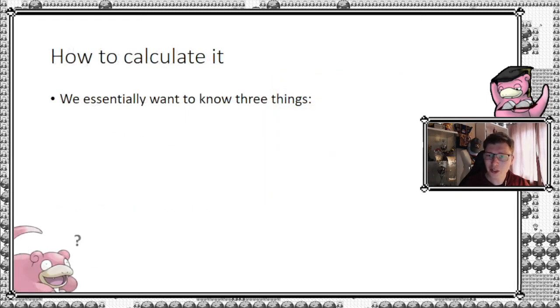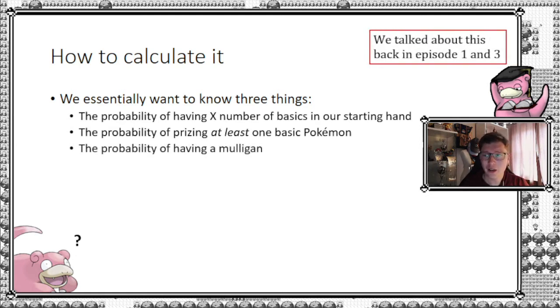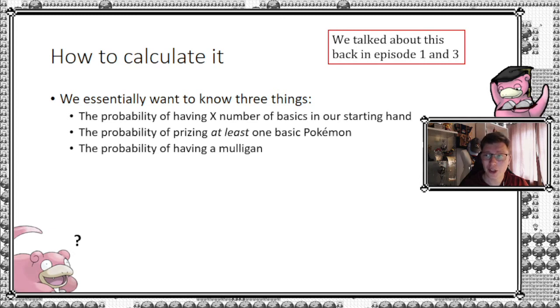So what do we need to know in order to calculate this? Before you get too confused, let's look at it step by step. First, you need the probability of having x number of basics in your starting hand of the game. Second, you need the probability of pricing at least one basic Pokemon. Finally, we need to correct for the chance of having a mulligan.